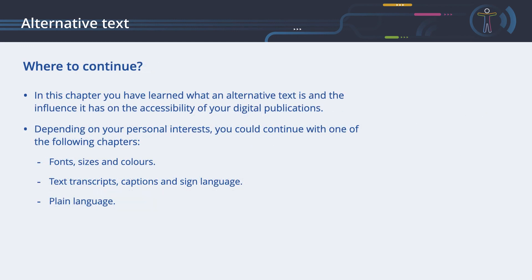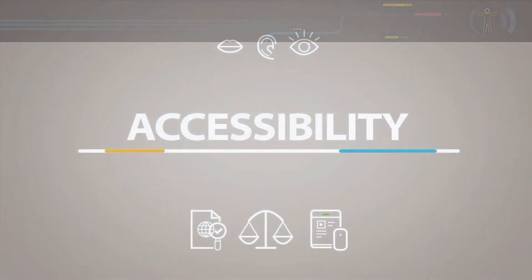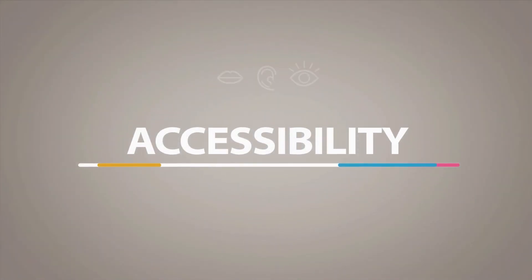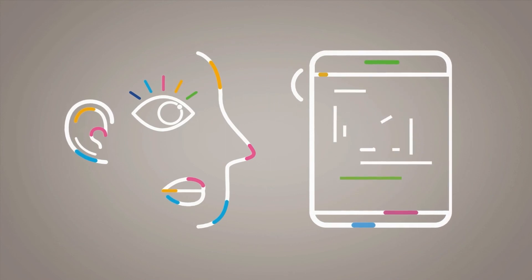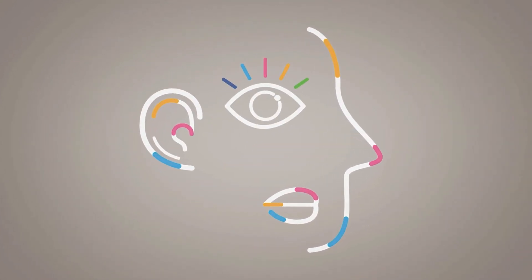In this chapter, you have learned what an alternative text is and the influence it has on the accessibility of your digital publications. Depending on your personal interests, you could continue with one of the following chapters: Fonts, sizes and colors; Text transcripts, captions and sign language; Plain language; or Accessibility. For more information, visit op.europa.eu/en/web/accessibility.